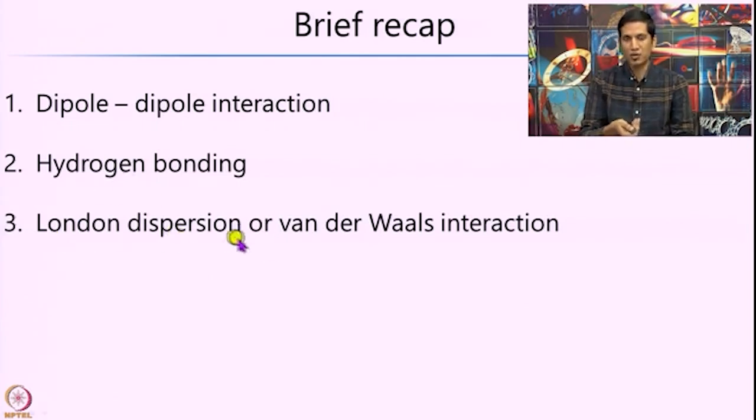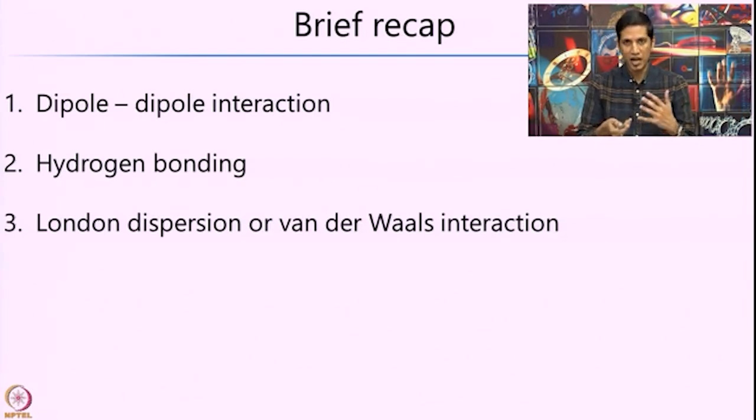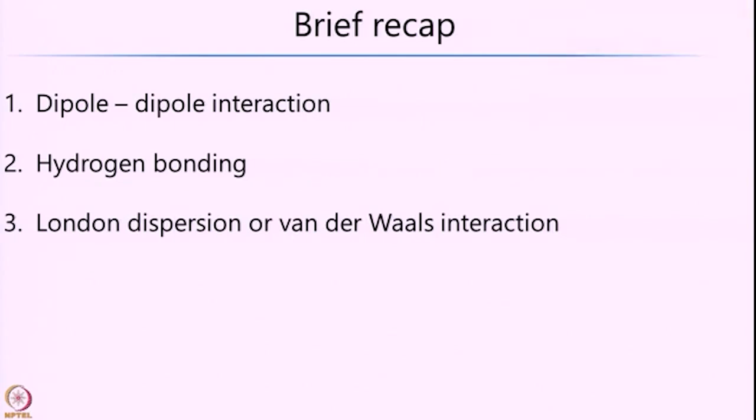Finally, we had gone ahead and looked at what are called as London dispersion or van der Waals interactions. Here we considered systems which were neither charged nor polar in the ground state — neutral and apolar molecules such as methane, ethane, argon, or other inert systems. The idea is that because of the instantaneous fluctuation of the electron density, an induced dipole arises in one molecule and affects the arrangement of neighboring molecules, leading to what people call London dispersion or van der Waals interactions.